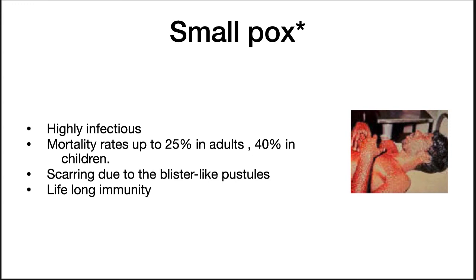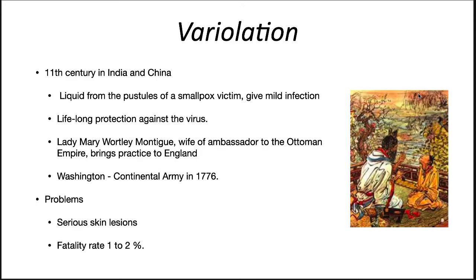We now shift our attention to smallpox. Smallpox was a feared disease that was highly infectious. Almost everyone eventually was infected with it, and it had a mortality rate of 25% — 40% in children. The disease would begin with fever, discomfort, and fatigue. Eventually, blister-like pustules would break out all over the person. If you survived the infection, you had a lifelong immunity to the disease. At some point in the 11th century, it was realized in India and China that the liquid from pustules of a smallpox victim, if given to another, would often result in a mild infection. This variolation, as it was called, gave lifelong protection against the virus.